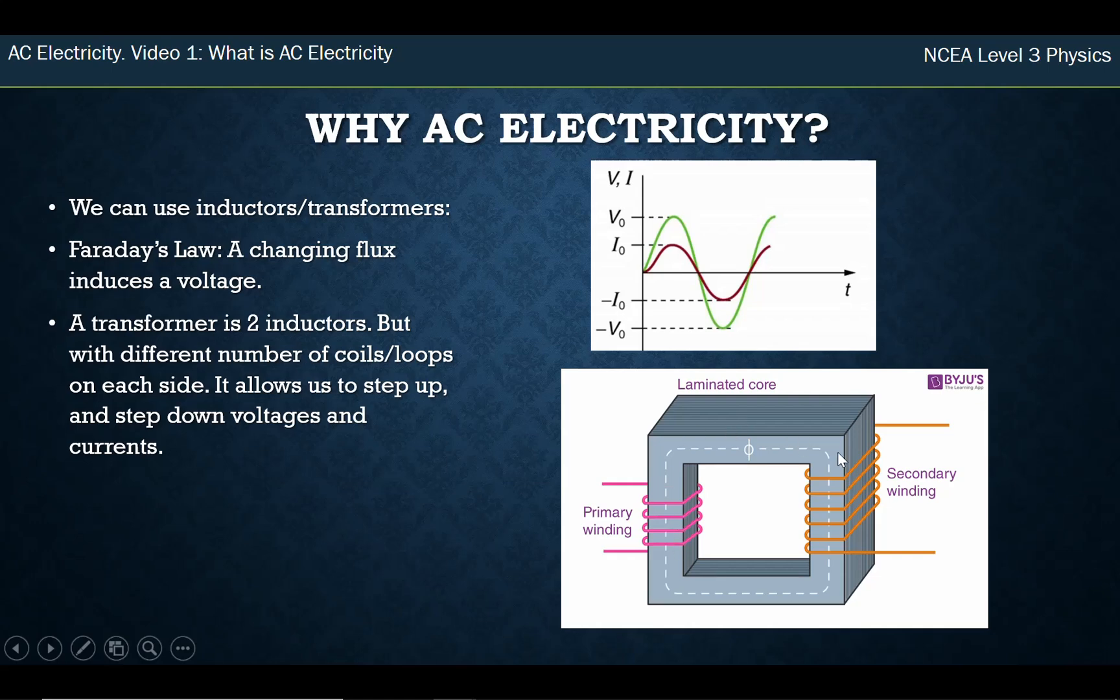Now instead of just being a party trick, the real advantage of this is when you have different amounts of coils. So there's like four times it's been wrapped around here. It looks like it's been wrapped around about eight times on this side. That can step the voltage up or it can step the voltage down. So it can go from 10 volts to 20 volts or back down from 20 to 10. And that ends up being very useful, which we'll go into that in further detail in a couple of videos.